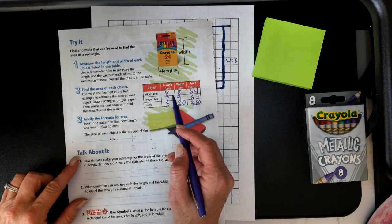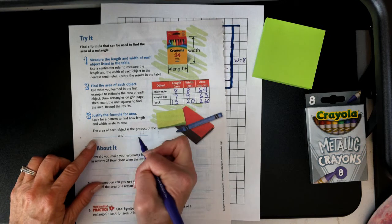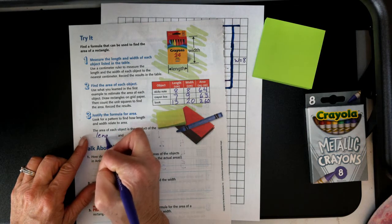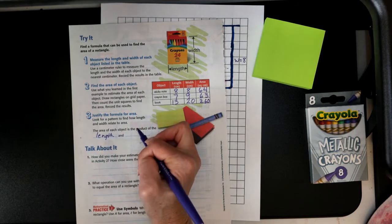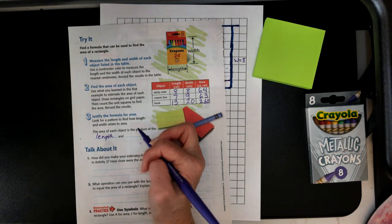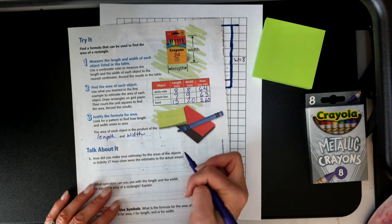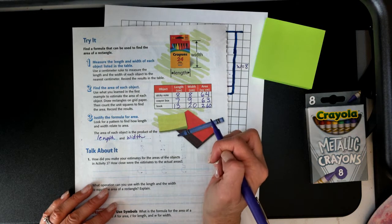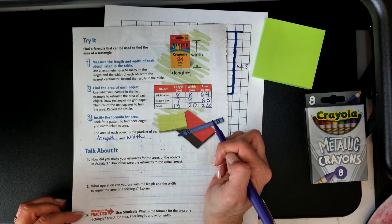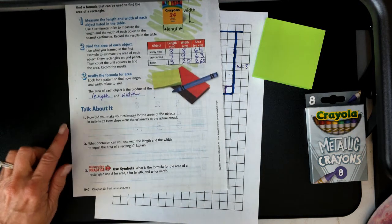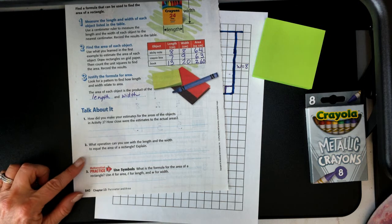You've learned that if you take the product of the length and the width, you will get the area squared. Now you're going to go ahead and do the talk about it with your teachers.